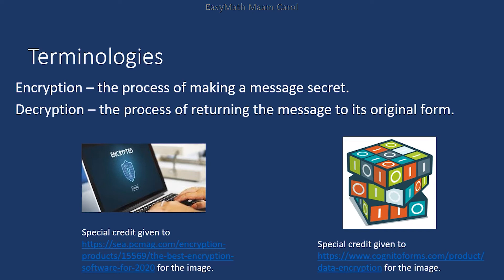The terminologies you will often encounter are encryption and decryption. Encryption is the process of making a message secret — you have a message you want to send, and before sending it you encrypt it, replacing letters with something else, like numbers or symbols, depending on the code used. Decryption is the process of returning the message to its original form. You will always see these terms in coding books and in cyber security — encryption and decryption, not encoding and decoding.